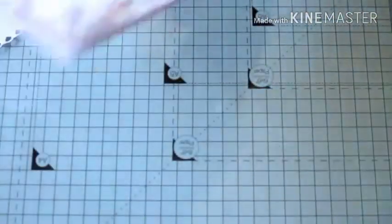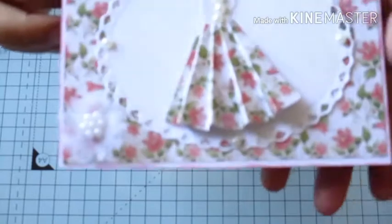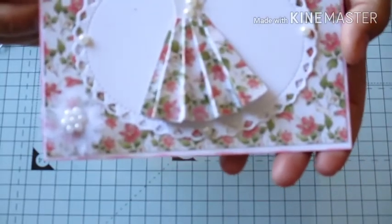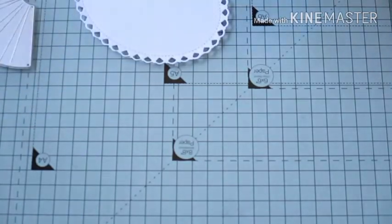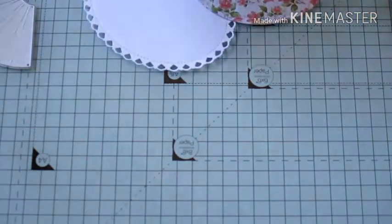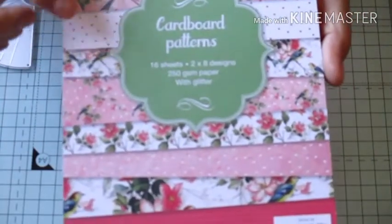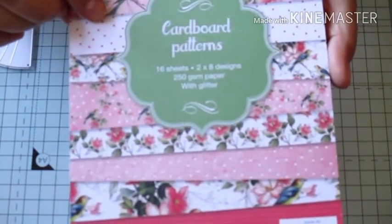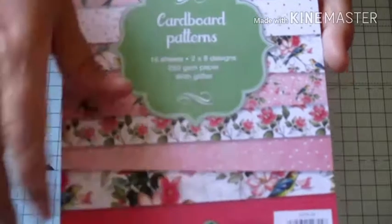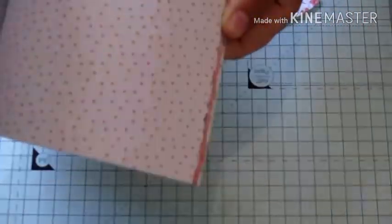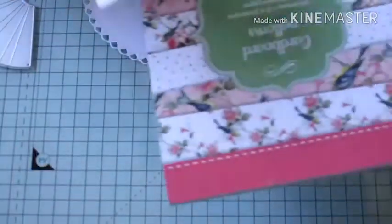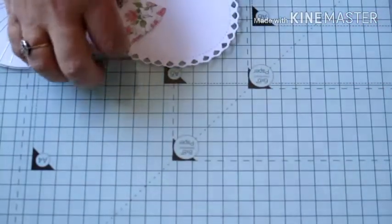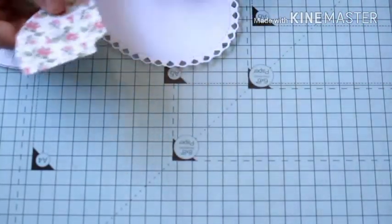I'll just show you quickly, this is the card that we're going to make today so you can see what the skirt looks like. So to start off with we'll do the skirt and I've cut it from this paper pad here, it's called Cardboard Patterns. I think I bought this one from the works, I think it was £2 and it's got some lovely glittered card stock in and it's nice and thick, it's 250gsm so it's made that skirt lovely. So I've chosen a floral piece to do my skirt.